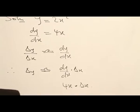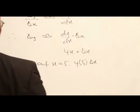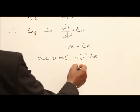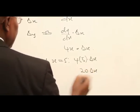At S equal to 5, we have 4 times 5 times ΔS. This will be equal to 20 times ΔS.